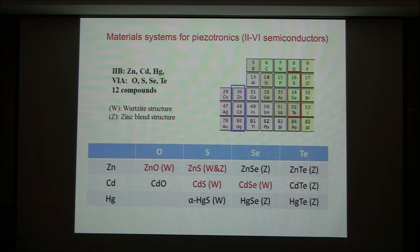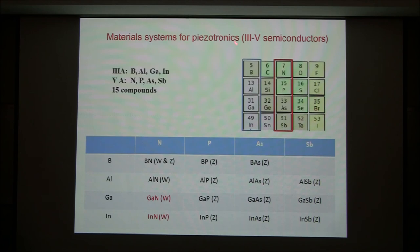If you look at the table of two-six compound semiconductors, all these materials will show the piezotronic effect. If you have a sample from those, you can study it yourself — I bet they should all have a piezotronic effect. For the three-five compound semiconductors like gallium nitride and indium nitride, all have this effect too. If you have the sample, you can study it.